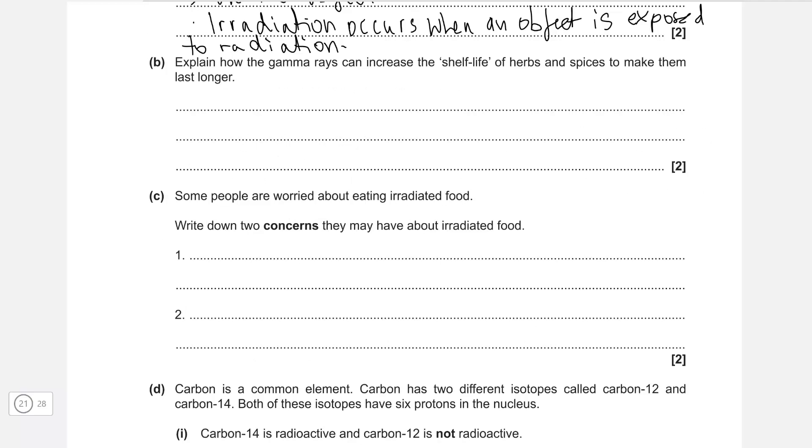Explain how gamma rays can increase the shelf life of herbs and spices to make them last longer. The gamma rays turn them into the Hulk. Well, not really, but they kill bacteria. The gamma rays can kill bacteria if the source emit gamma rays, and that will slow down the decay of the food.